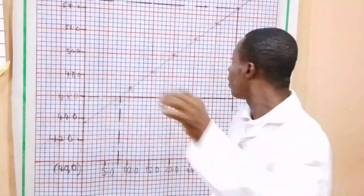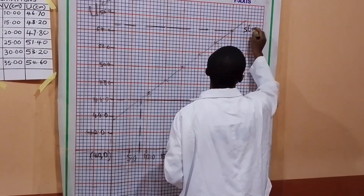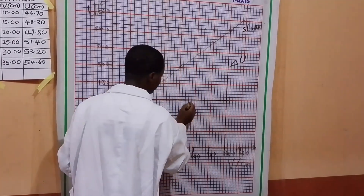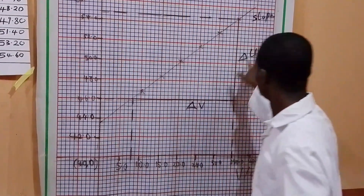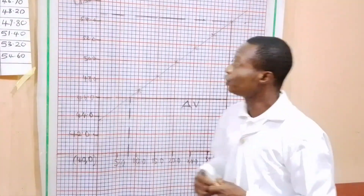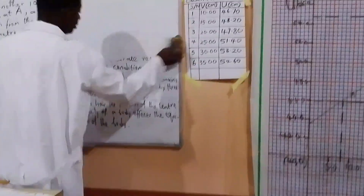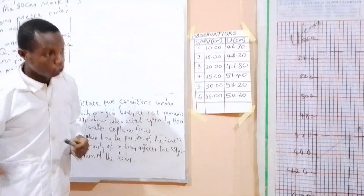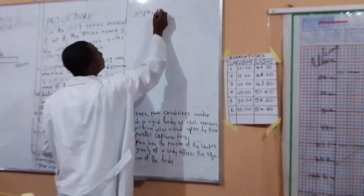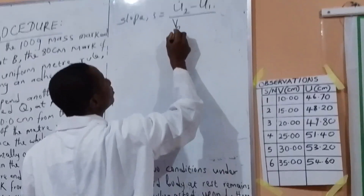We can now put down our values. The slope S equals U2 minus U1 over V2 minus V1. This is because U is changing on the vertical axis and V is changing on the horizontal axis. So let's calculate our slope from here.